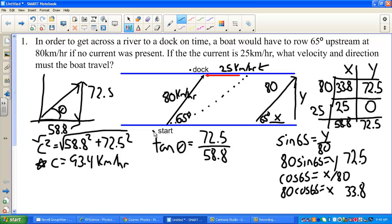And this will be the inverse tan. And that came out to be, it needs to be smaller than 65 because you have to go upstream. That came out to be 50.9 degrees. And it is.